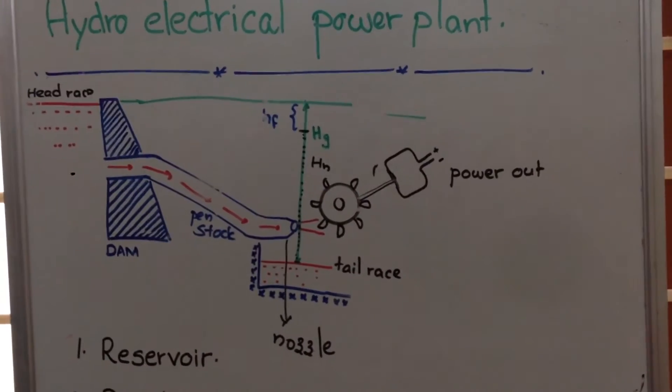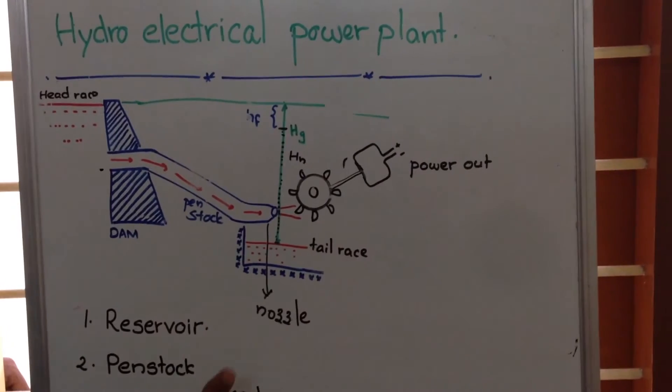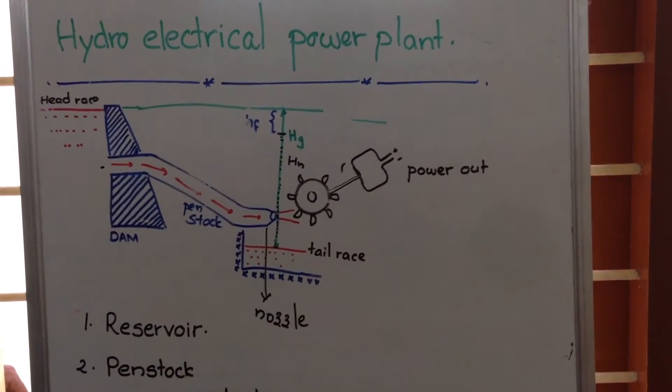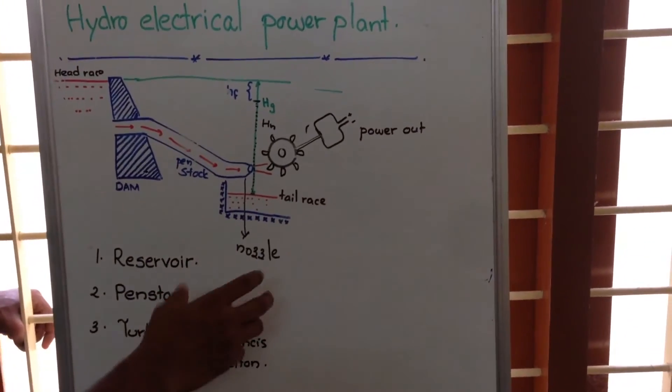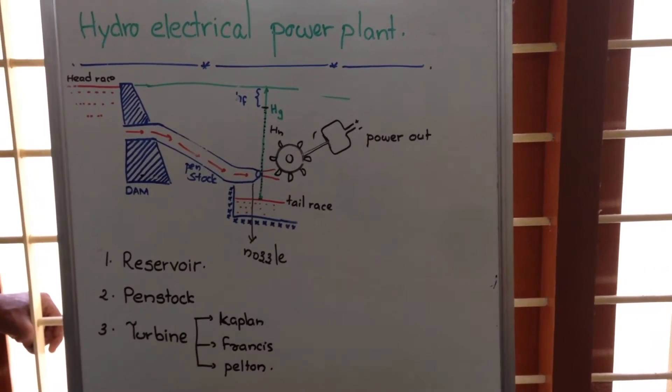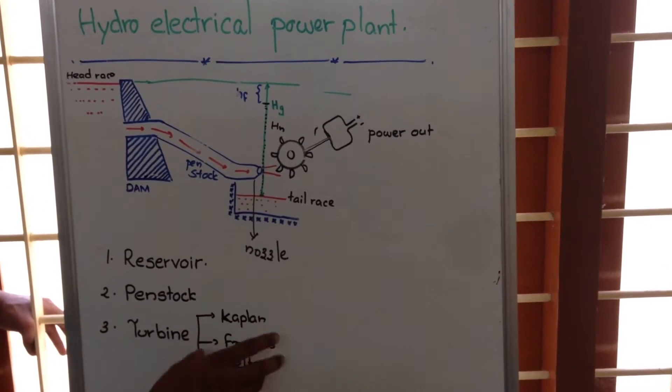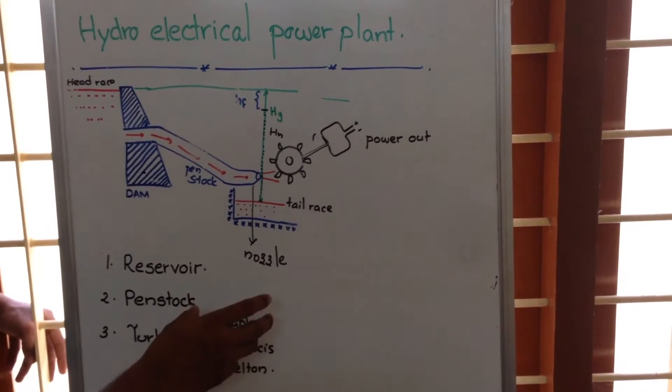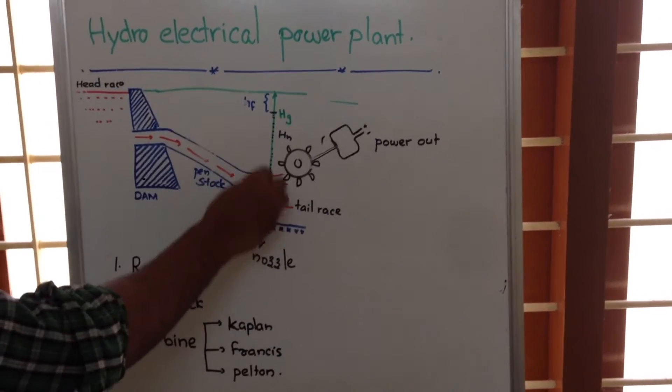This turbine is available for different heads - it can be used for low head, high head, and medium head. Sometimes for high heads, they are called Pelton turbines, where there is only the use of kinetic energy of the water reaching at the nozzle.